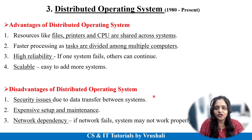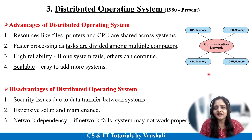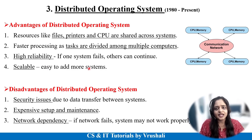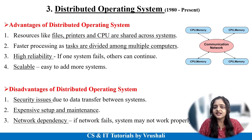The advantages of distributed OS: multiple computers and nodes are connected to a single system, so they share all resources like files, printer, and CPU. They have high processing power and tasks are divided across multiple computers and nodes, giving quick results and quick response time. Another advantage is high reliability — if one system fails in the network, others can continuously do their work, and the system is very scalable as you can add multiple devices at any time. The main disadvantages are that the setup and maintenance are very expensive, and since multiple nodes serve the user, there are security issues between systems.